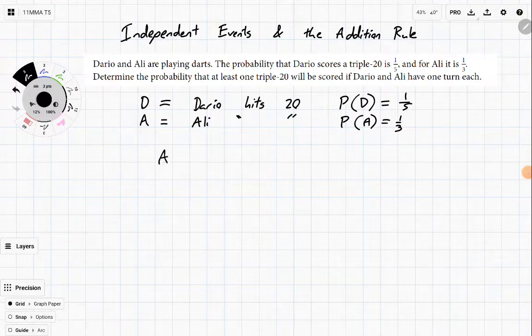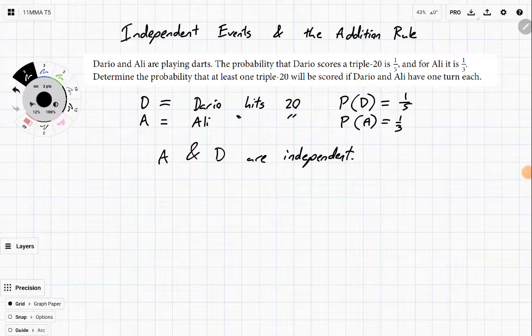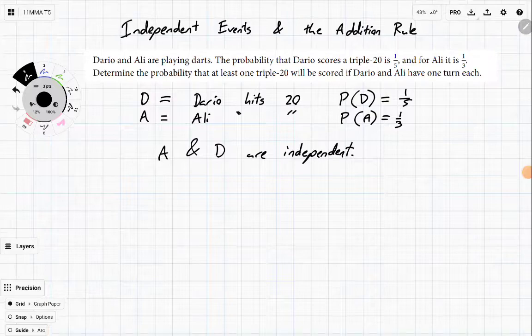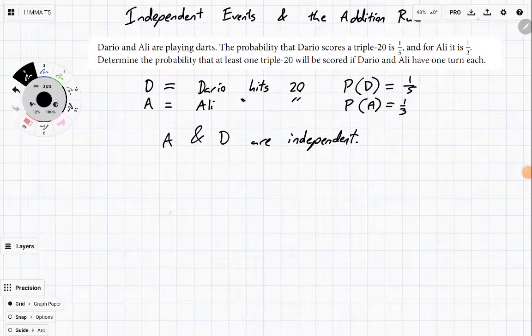And it's a good thing to note that A and D are independent. So we can use the multiplication rule that we use all the time. Okay, so what are the different outcomes that could happen? Well, here comes Mr. Tree Diagram to help.